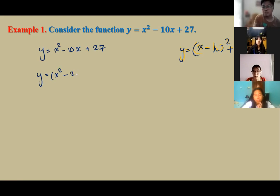y is equal to x squared minus 10x plus 27. 2 multiplied, x multiplied by 5. Plus 5 squared, plus 25, minus 5 squared, plus 27, plus 27.